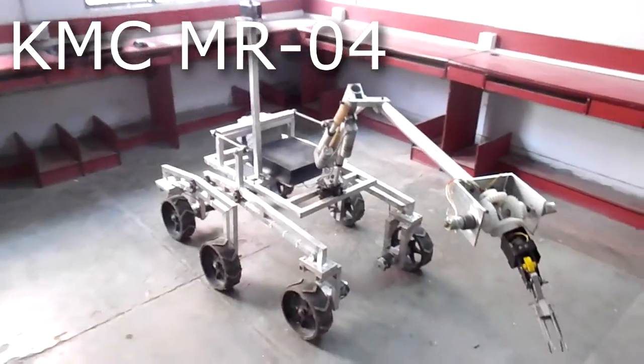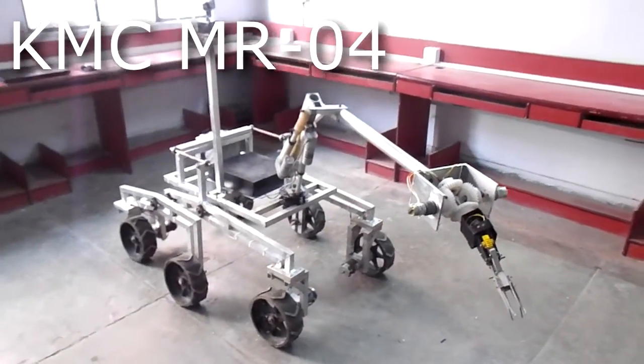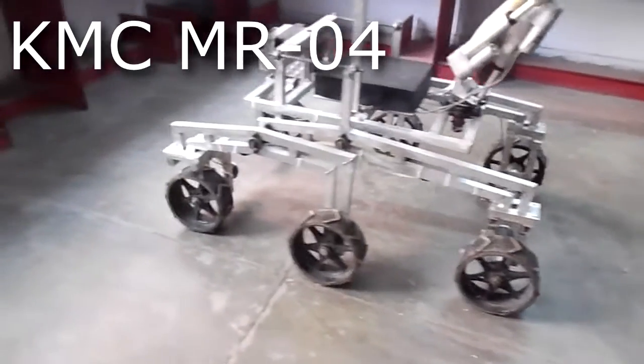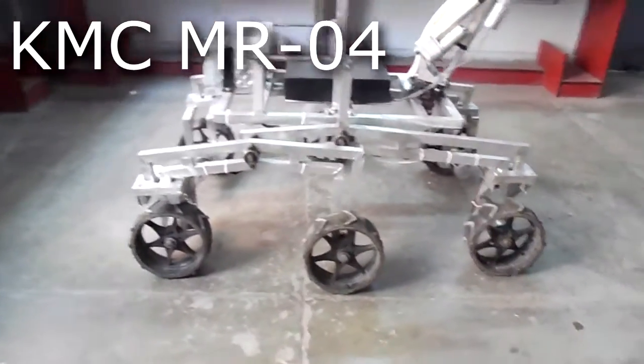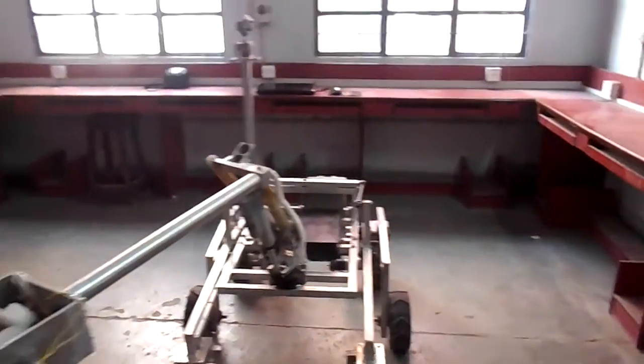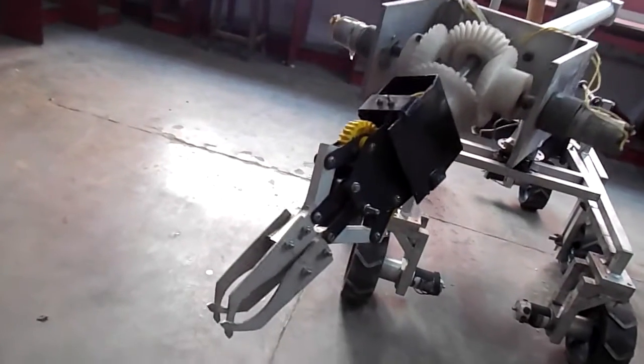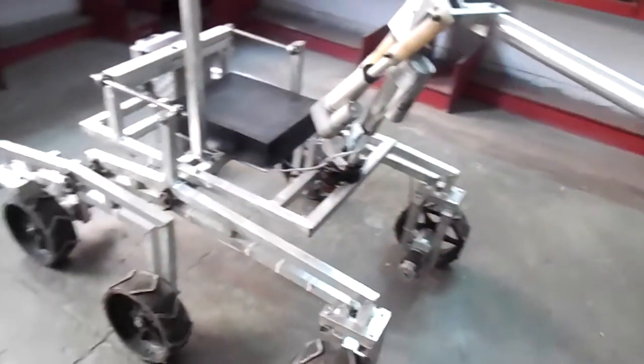KMC MR04 features a dynamic rocker-bogey suspension system with four-wheel steering and six-wheel drive. The rover has a 100 cm wheelbase, 45.5 cm height and 70 cm width. The height of rover, including the height of camera, is about 127 cm.